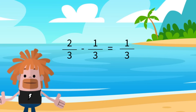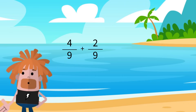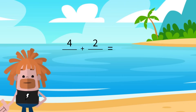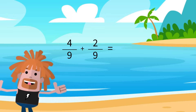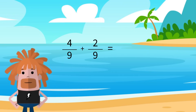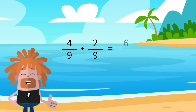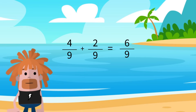Let's do another example: 4 ninths plus 2 ninths. The denominators are the same, so we just need to add the numerators. 4 plus 2 is 6, and we are going to write back our denominator, 9. The answer is 6 ninths.